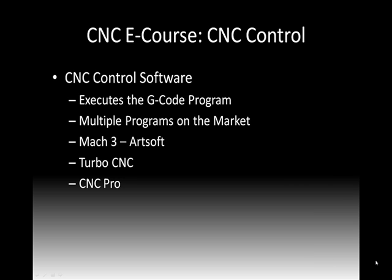The next component is control software, and that software is what executes the G-code program. It walks line by line through each of those steps and directs our machine. There are a bunch of different control programs on the market. I'm a huge fan of Mach 3 by Artsoft — it's an organic control program that's grown over the last five or six years and has a huge community of supporters. I've also used Turbo CNC and CNC Pro, the DOS versions of those. There are a number of options out there on the market.